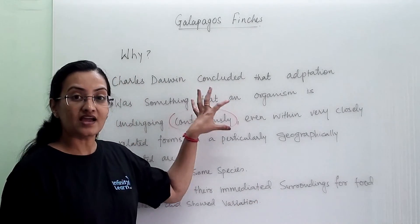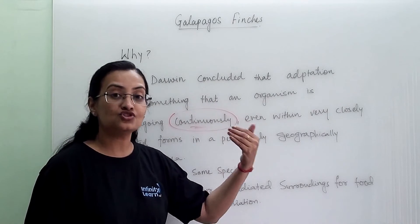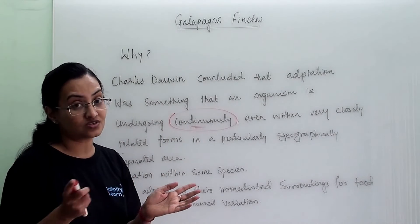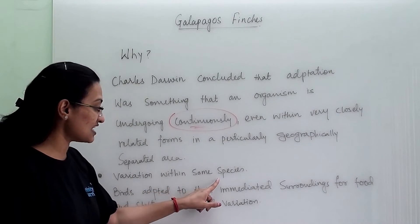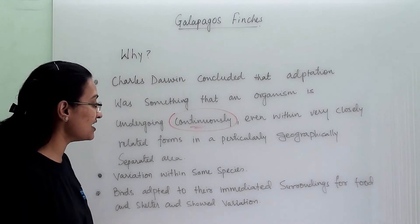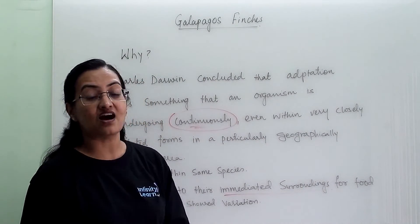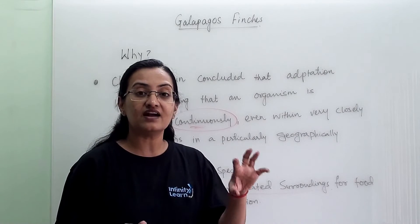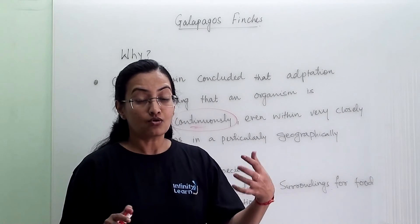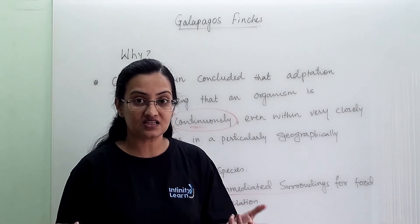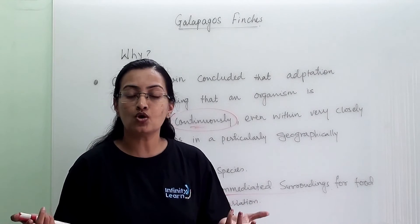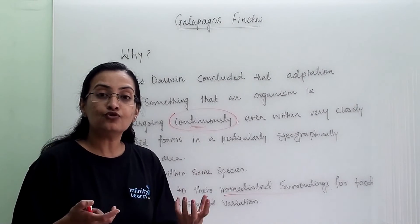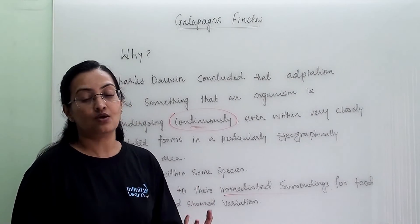Coming back to the finches — why has one single species shown so many variations? That variation within the same species occurred because the birds adapted to their immediate surroundings. The Galapagos group of islands each has a different geographical situation. Some finches got surroundings with meadows or grass, some with fruit trees, and some near rivers, ponds, or lakes. Based on that, they adapted to their surroundings and changed their food needs so that food would be easily available to them.